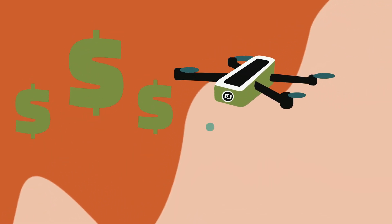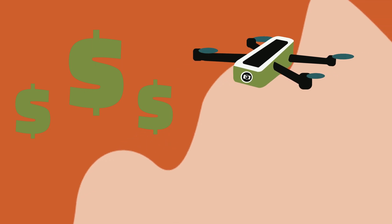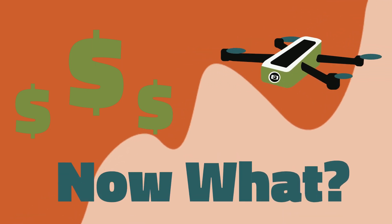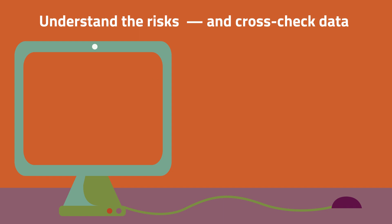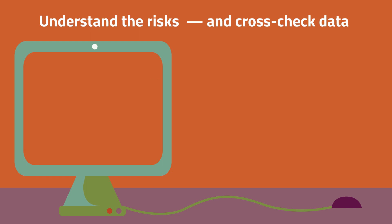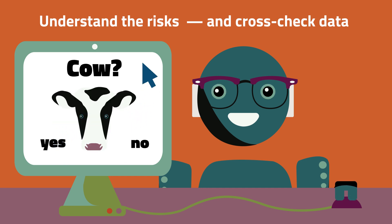Adversarial attacks could be used for everything from insurance fraud to launching drone strikes on unintended targets. So what can be done about it? The first step is awareness — anyone involved in developing machine learning systems should understand the potential risks and put in place systems for cross-checking and verifying data on a regular basis.